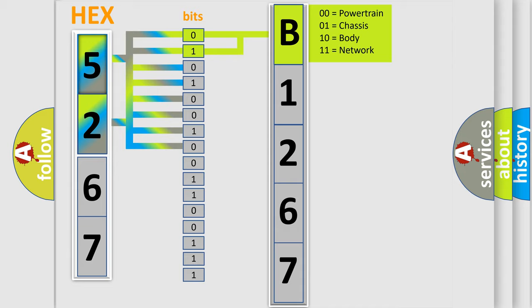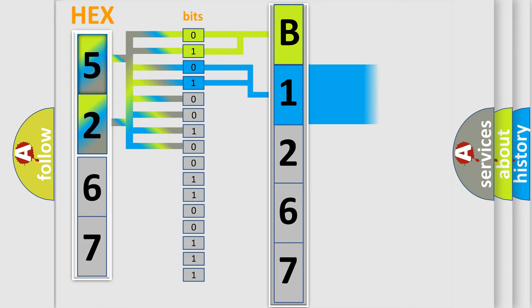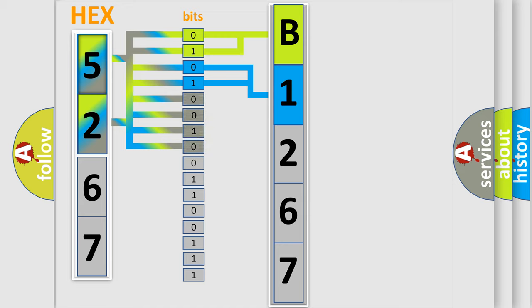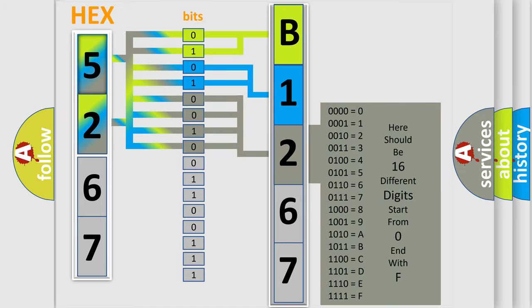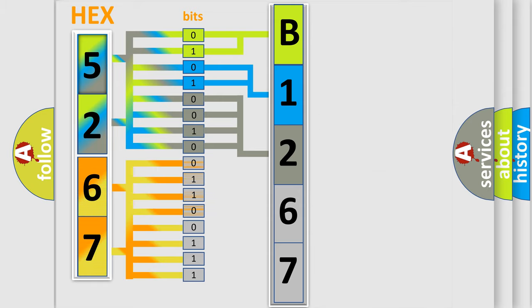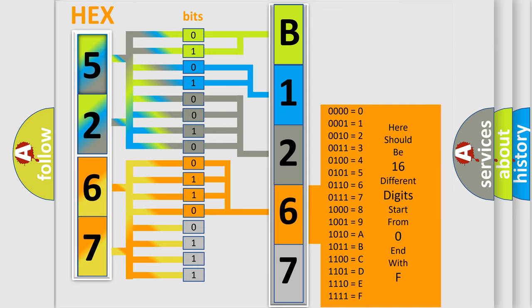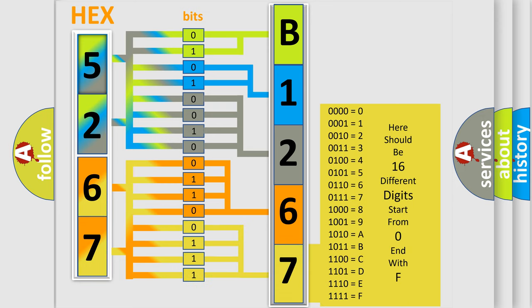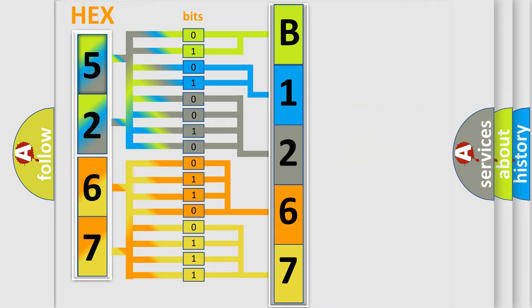By combining the first two bits, the basic character of the error code is expressed. The next two bits determine the second character. The last bits of the first byte define the third character of the code. The second byte is composed of a combination of eight bits — the first four bits determine the fourth character, and the last four bits define the fifth character. A single byte conceals 256 possible combinations. This is how the diagnostic tool translates received information into a more comprehensible format.